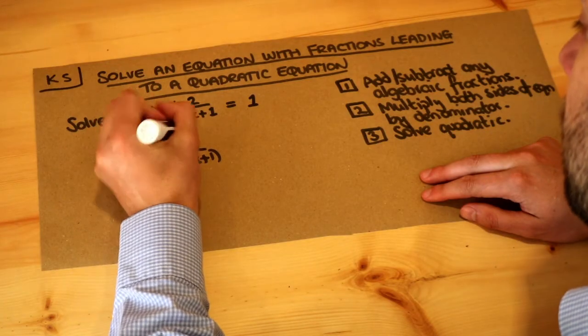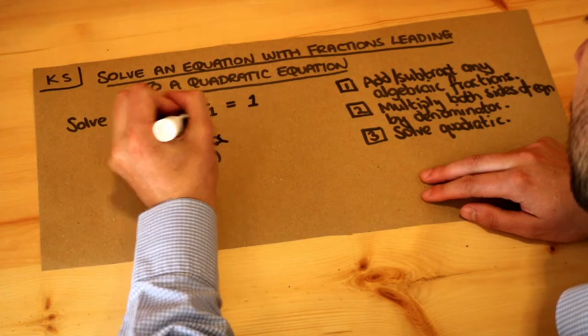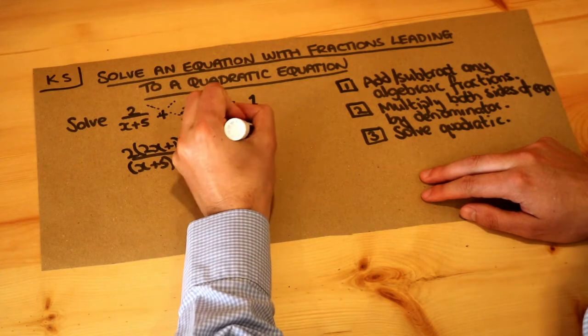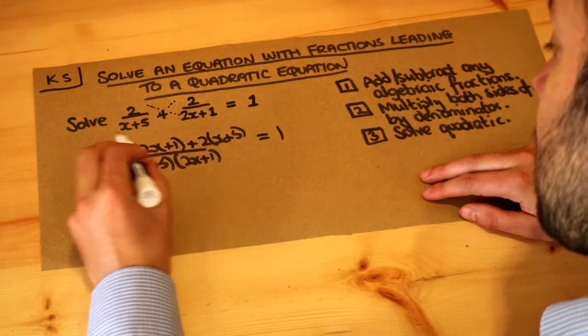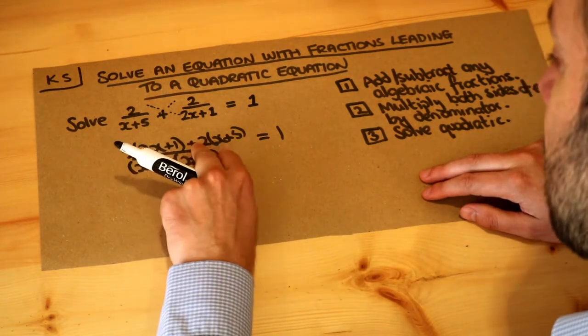Plus, in the middle, 2 times (x + 5), and that is equal to 1. Now we should probably expand out everything first. We've got 2 times 2x which is 4x, plus another 2x is 6x.